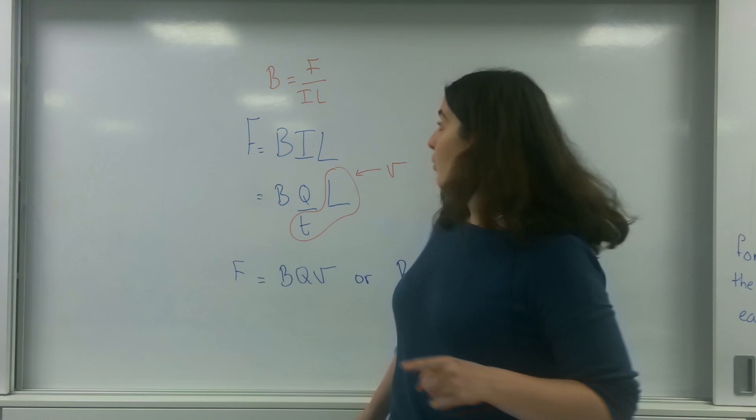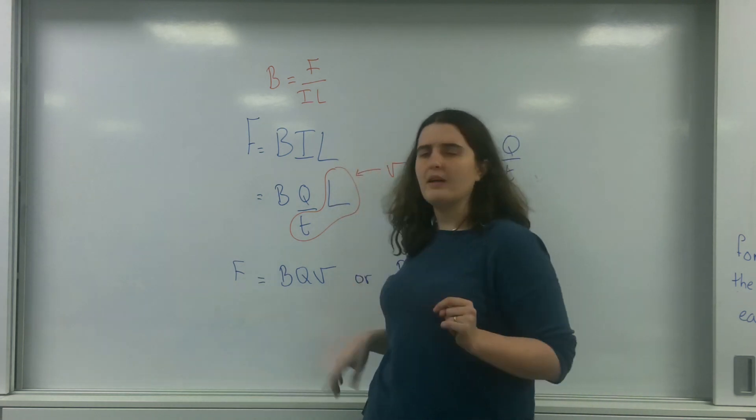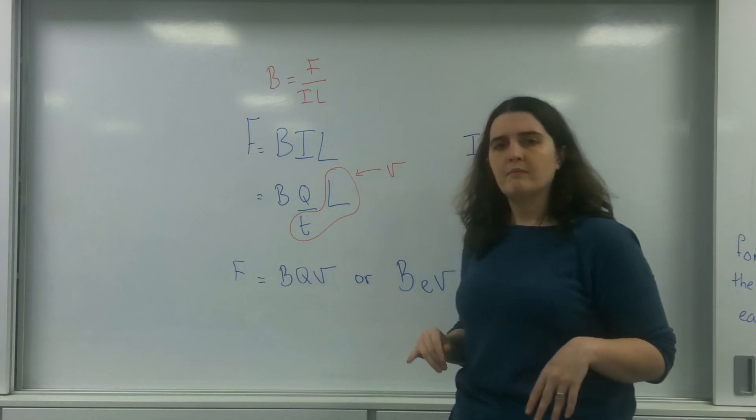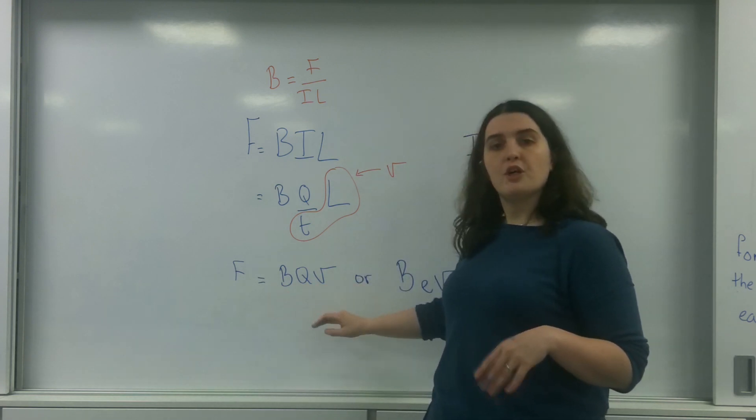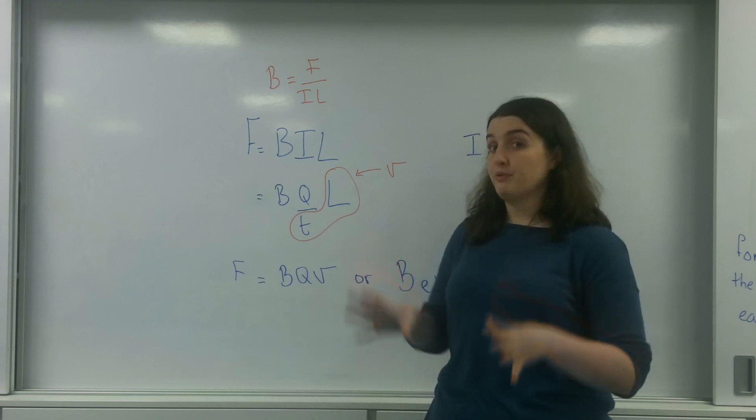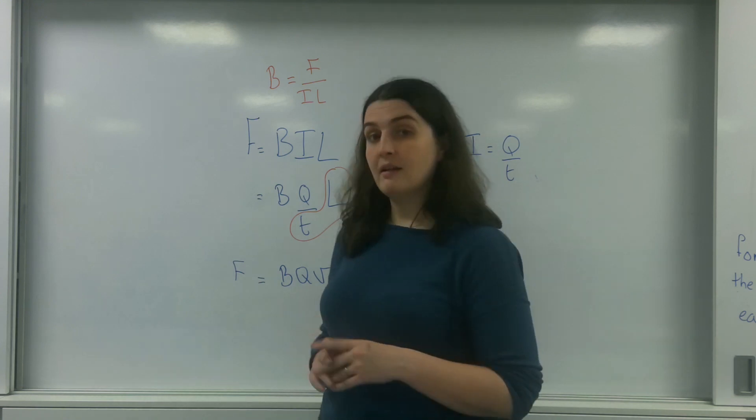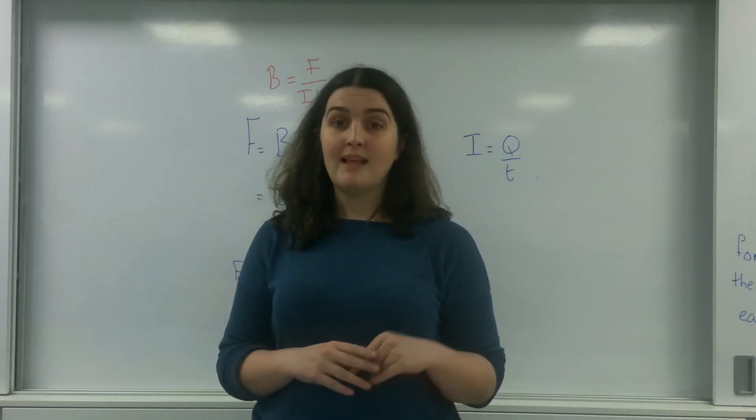So important things. One, this is the defining formula of magnetic field strength. However, this one, magnetic field strength times moving charge, can also be used if the actual system or situation is appropriate and you require it. So that there is Bill and Bev.